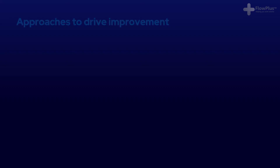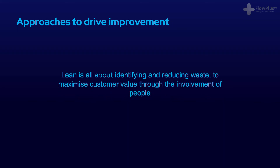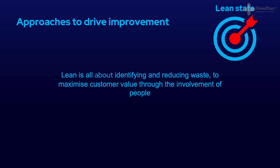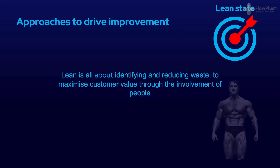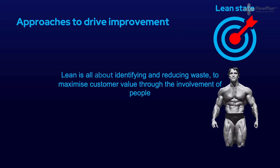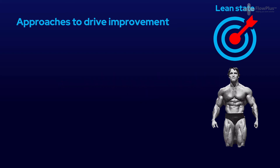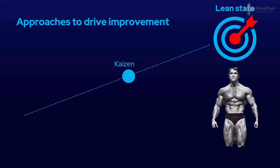Before we go on, I'll quickly clear up the difference between lean, Six Sigma and continuous improvement. Lean is all about identifying and reducing wastes to maximise customer value through the involvement of people. Lean describes the result and destination of a company that is operating with little waste and high efficiency. Think of lean like being a bodybuilder with little fat and only efficient muscle.